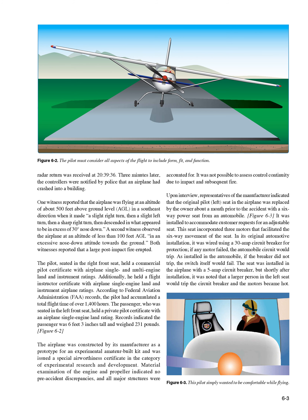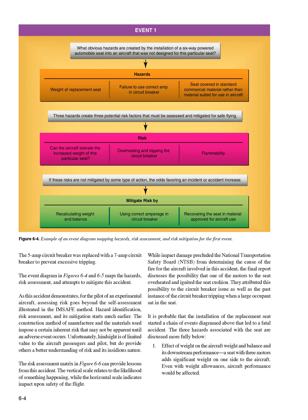Upon interview, representatives of the manufacturer indicated that the original pilot seat in the airplane was replaced by the owner about a month prior to the accident with a six-way power seat from an automobile, installed to accommodate customer requests for an adjustable seat. This seat incorporated three motors that facilitated six-way movement. In its original automotive installation, it was wired using a 30-amp circuit breaker. The seat was installed in the airplane with a 5-amp circuit breaker, but after a larger person tripped it and the motors became hot, the 5-amp circuit breaker was replaced with a 7-amp circuit breaker to prevent excessive tripping.